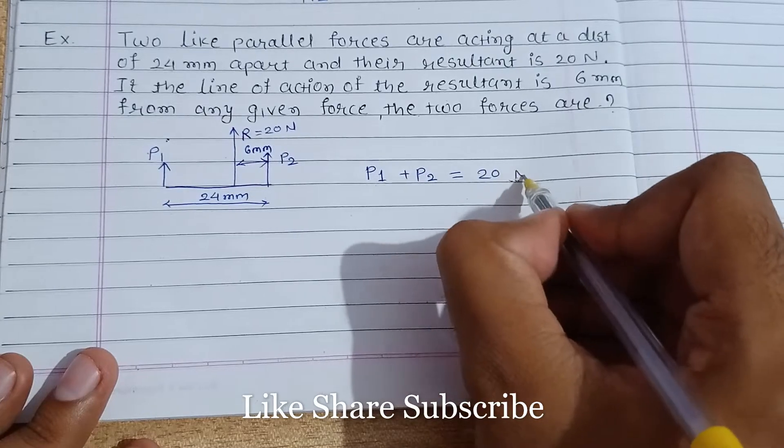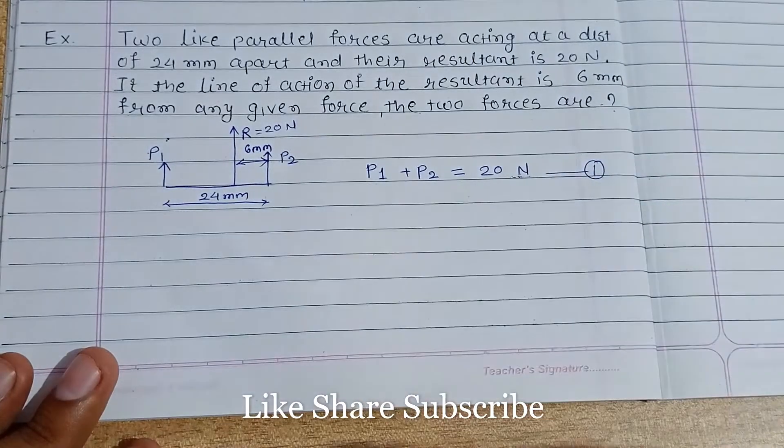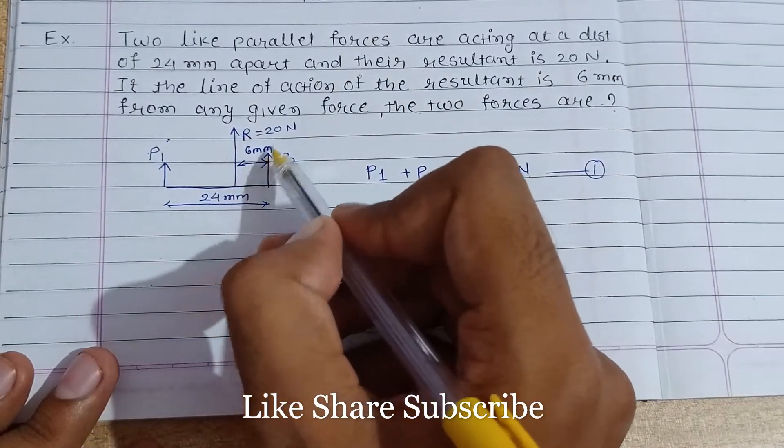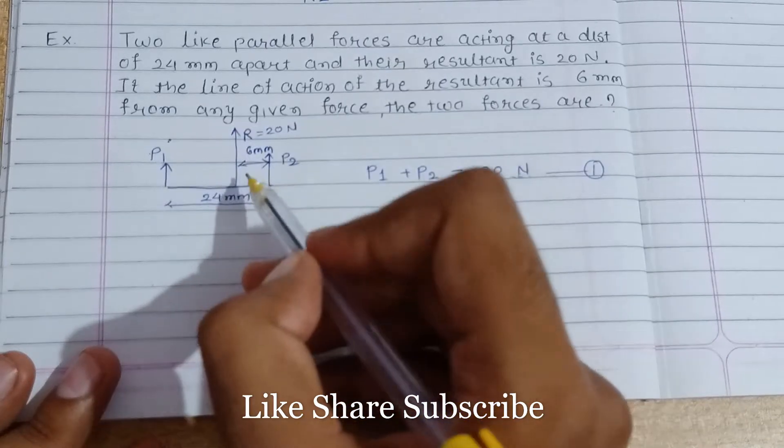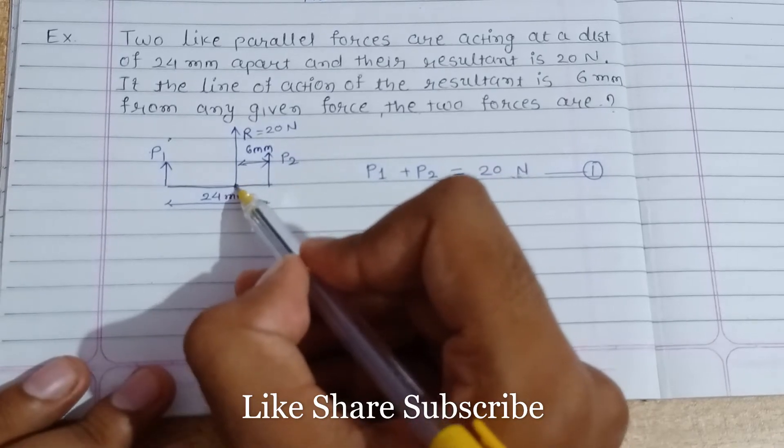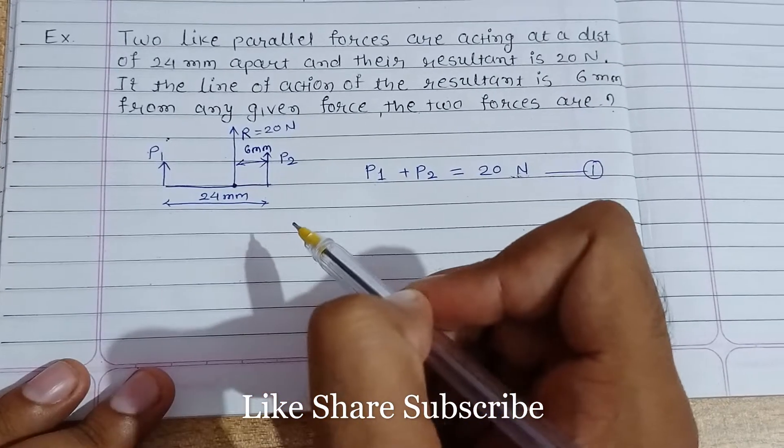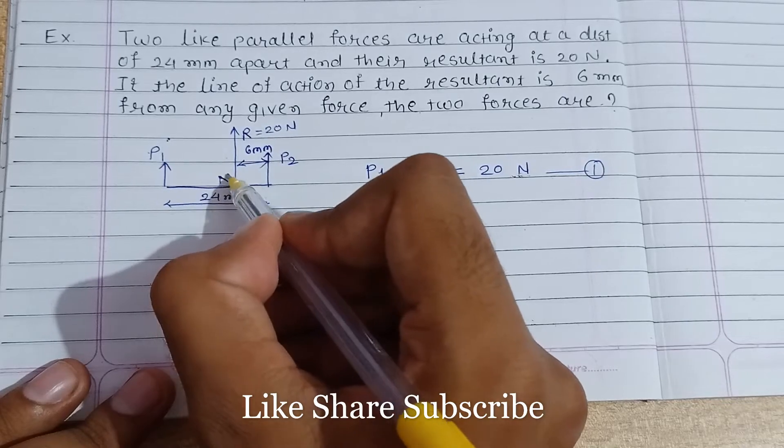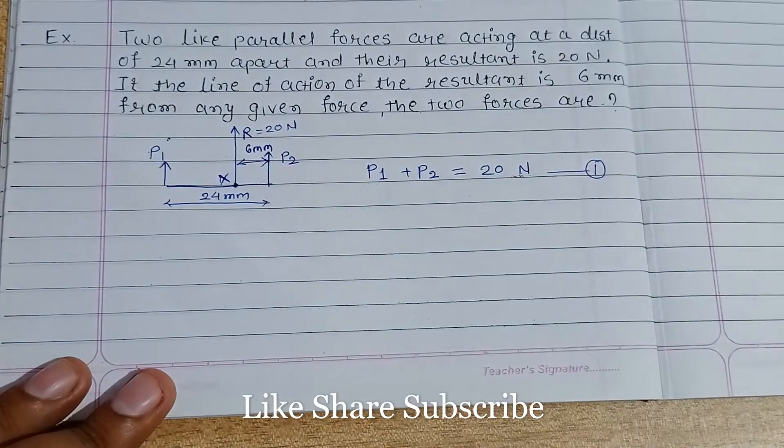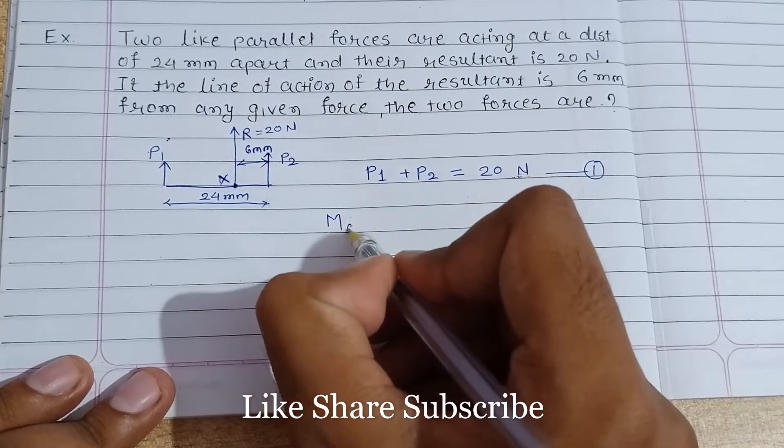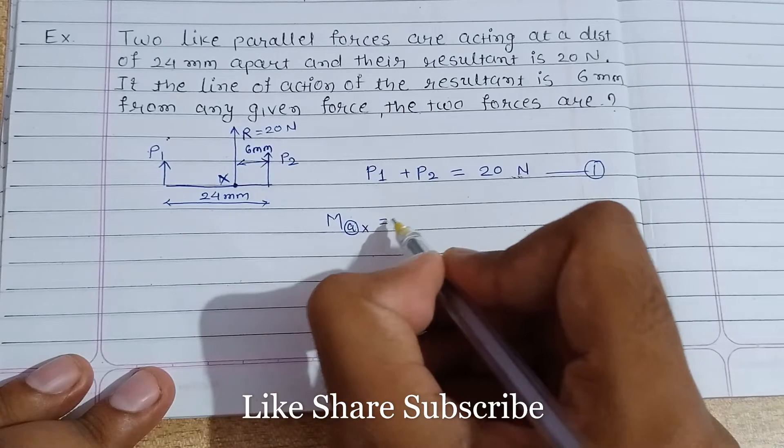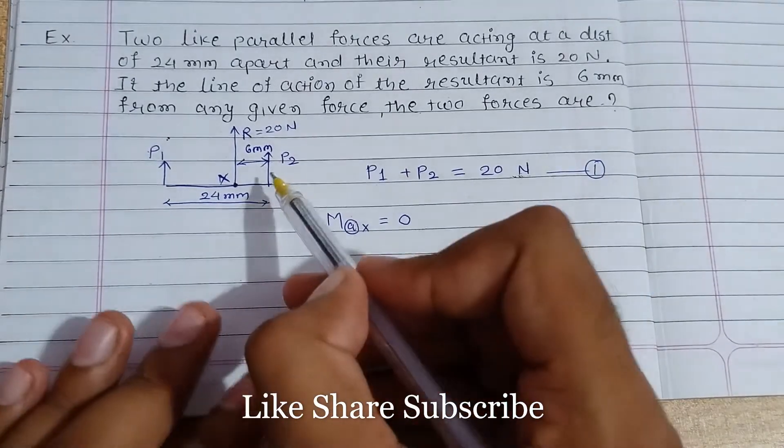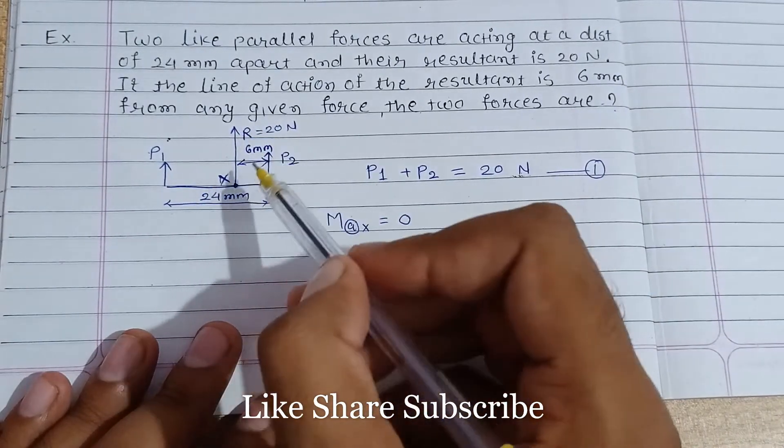And resultant is acting at a distance of 6 mm from one of the given forces. So the moment about the resultant would be zero. If you consider the moment about this point, let's say point X, moment about point X equal to zero.